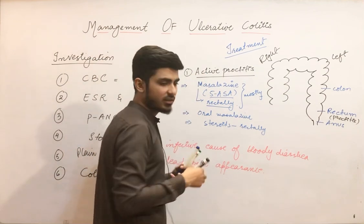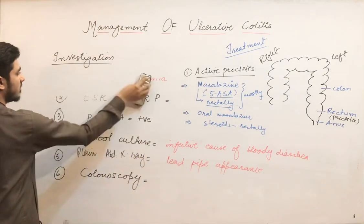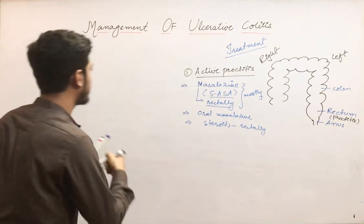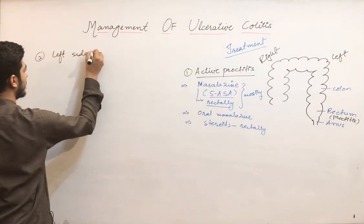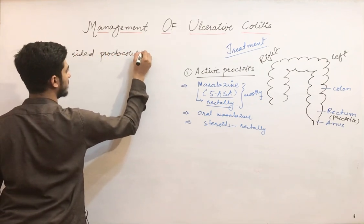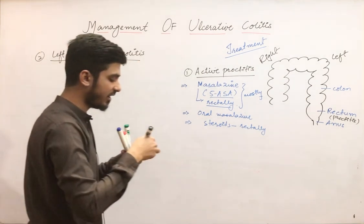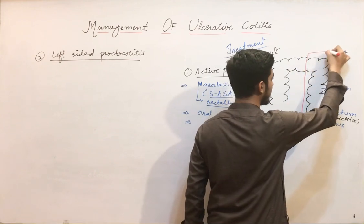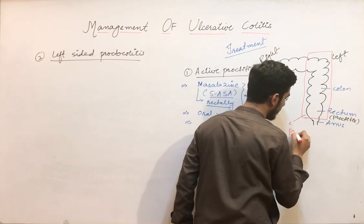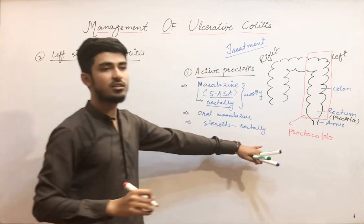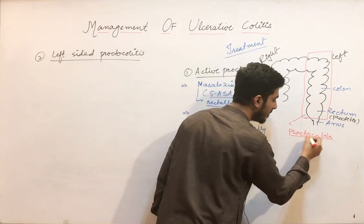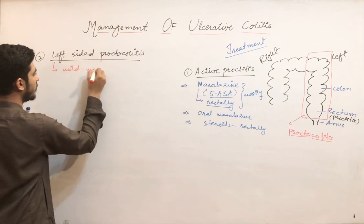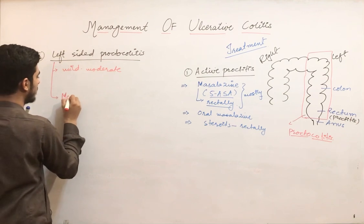The second case is left-sided proctocolitis. Proctocolitis means the rectum is involved as well as the colon. In this case, we divide it into mild-to-moderate and moderate-to-severe.